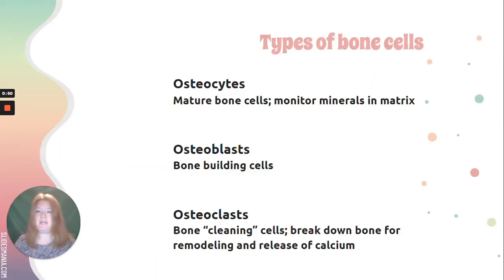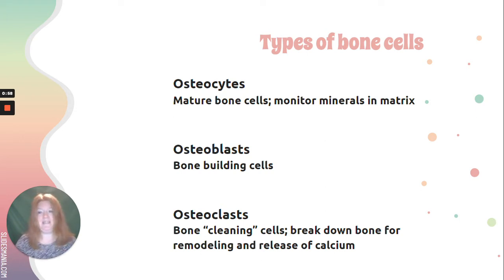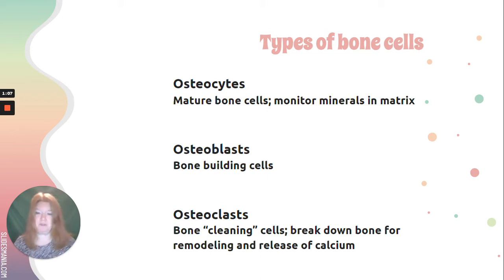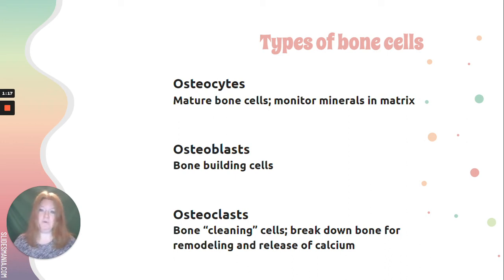There are three main types of bone cells. Osteocytes are the mature bone cells — they monitor the mineral content in the matrix and make adjustments as necessary. Osteoblasts — B for builders — build new bone. And osteoclasts are the cleaners; they break down bone when we need to remodel or release calcium. So if you aren't getting enough calcium in your diet, your osteoclasts are going to break down some bone to get calcium.